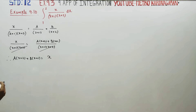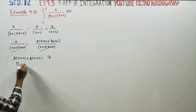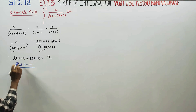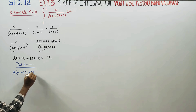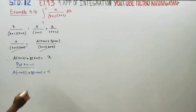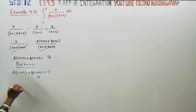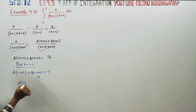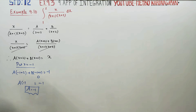Give convenient values for x to find A and B. Put x equal to minus 1. Then A into (minus 1 plus 2) plus B into (minus 1 plus 1) equals minus 1. This gives A into 1 plus B into 0 equals minus 1, so A is equal to minus 1.